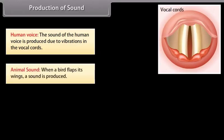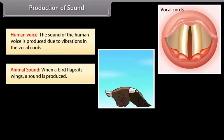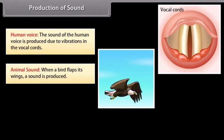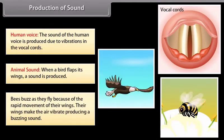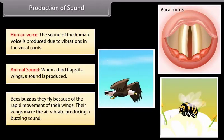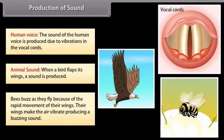Animal sound. When a bird flaps its wings, a sound is produced. Bees buzz as they fly because of the rapid movement of their wings. Their wings make the air vibrate, producing a buzzing sound.